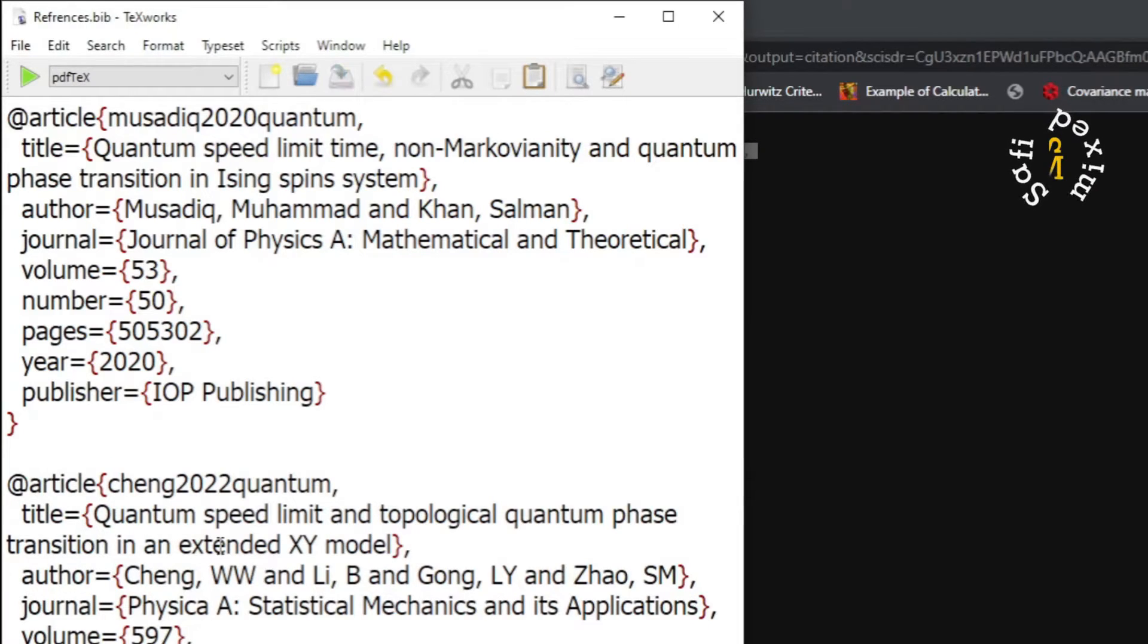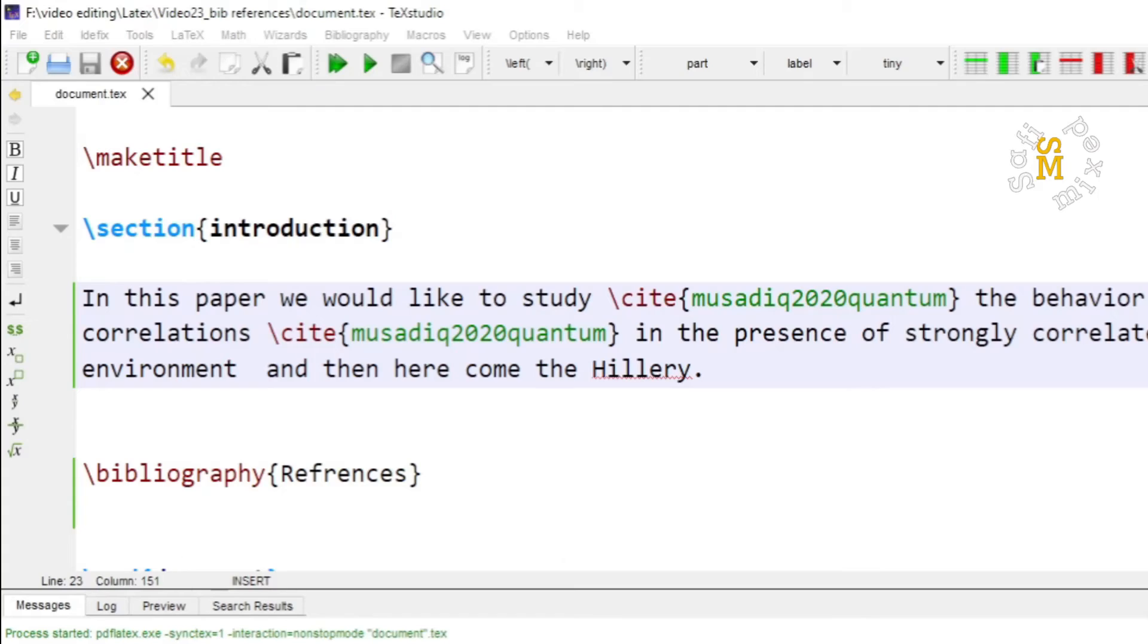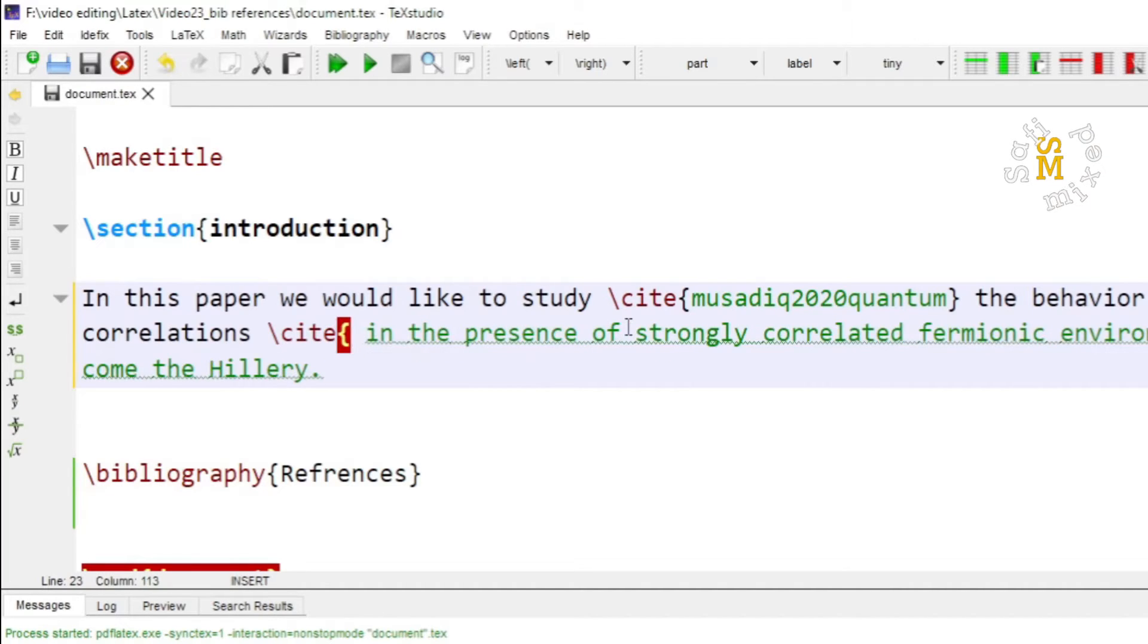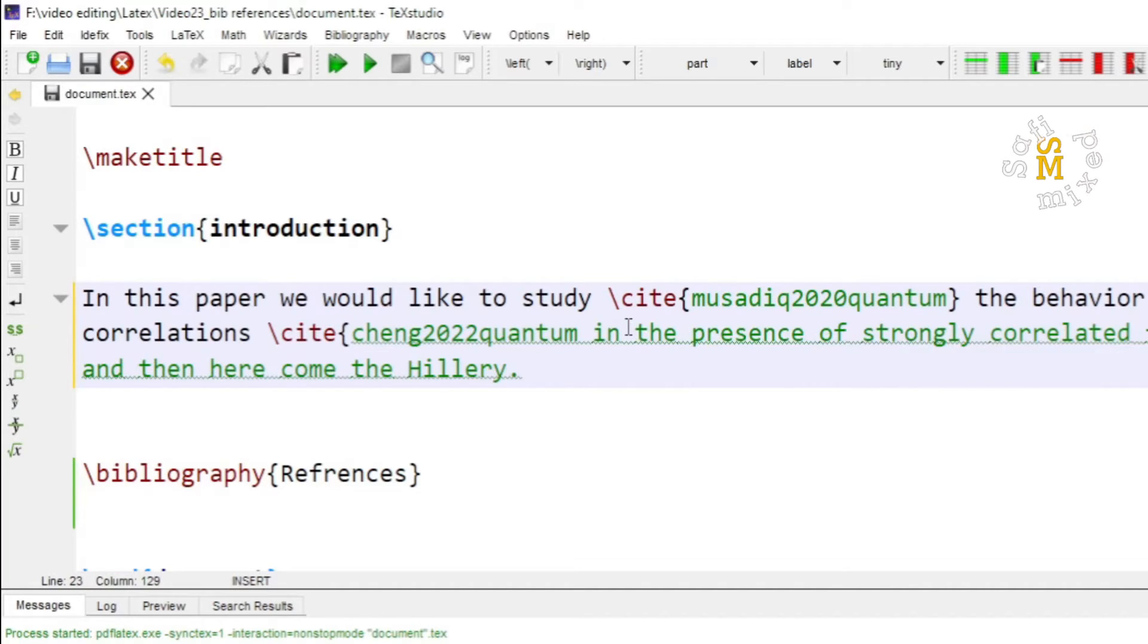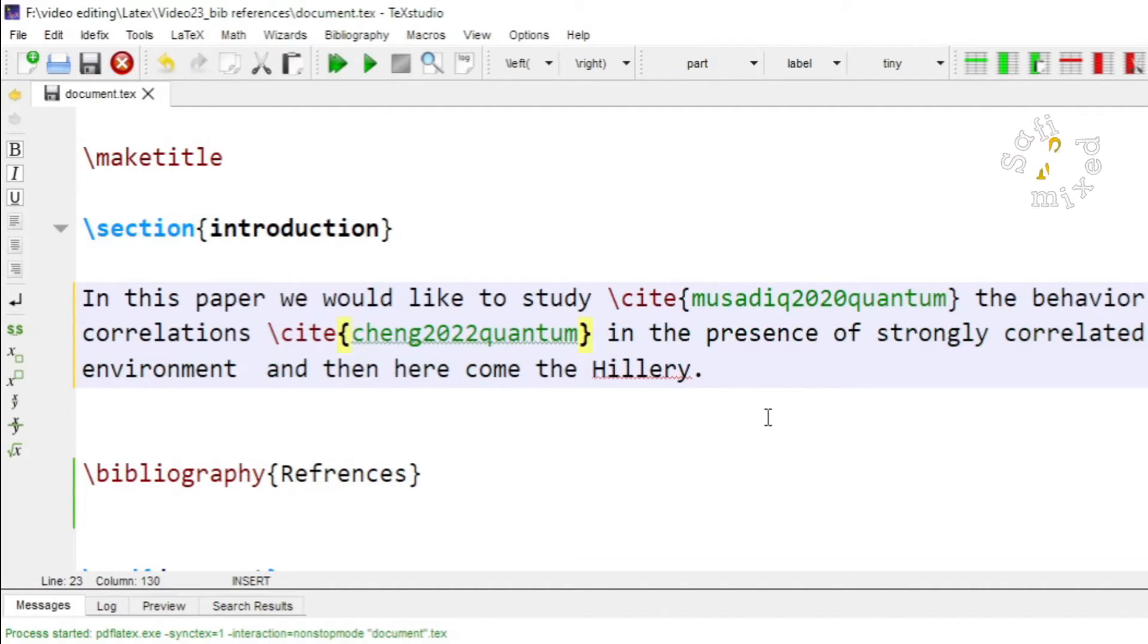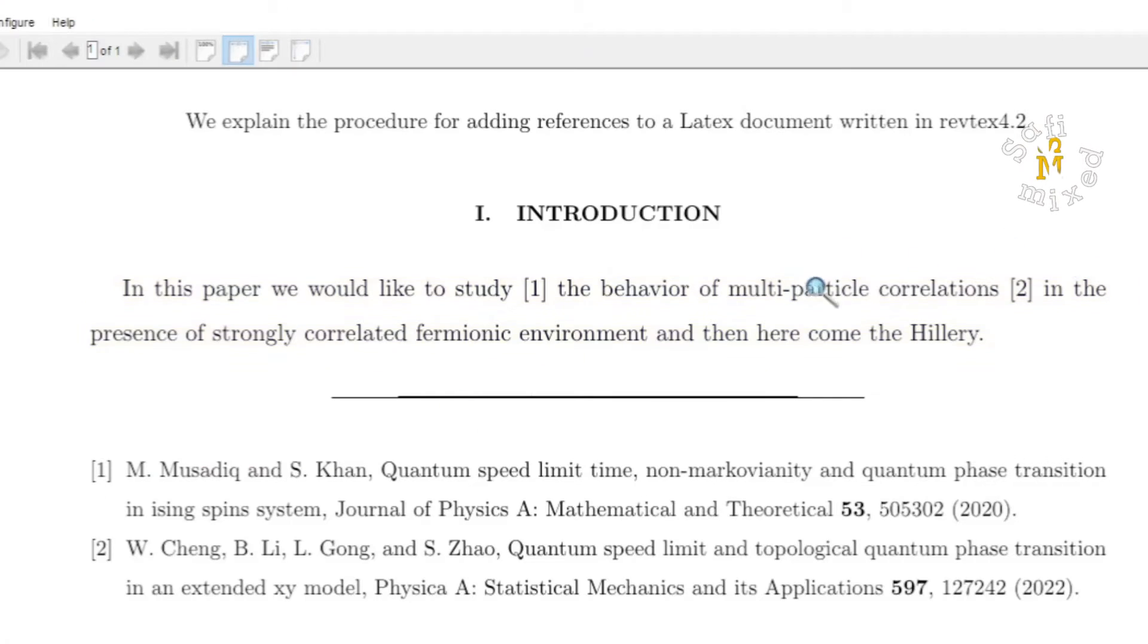I save the file and I copy the key of the article by selecting and pressing ctrl c and come over here and add the key at this position to the document and now I build the document. You see now the second is cited over here.